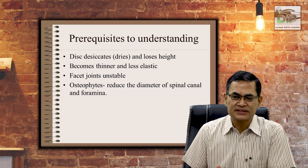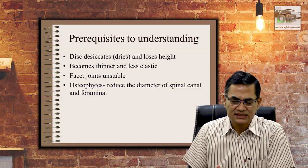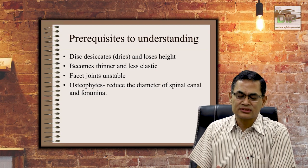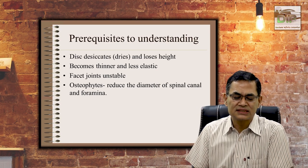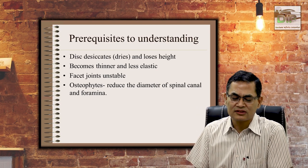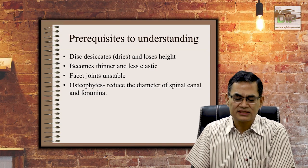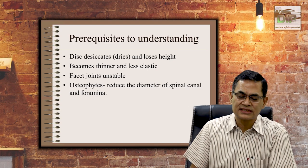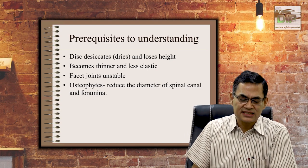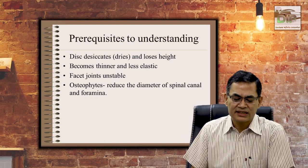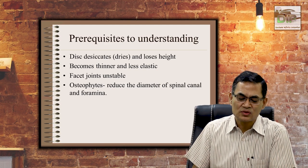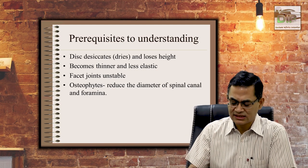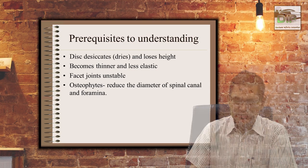Spondylosis is not a disease of just the bone or the disc — it involves other areas of the spine as well. The disc degenerates and loses its height, becomes thinner and loses its elasticity. The facet joints become unstable, and osteophytes form, which can reduce the diameter of the spinal canal and foramina, with its own consequences.